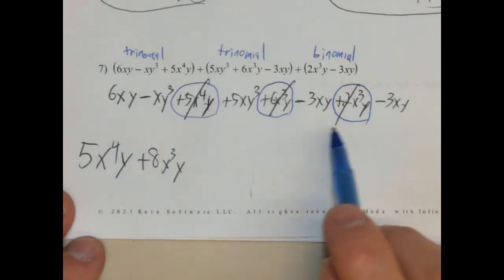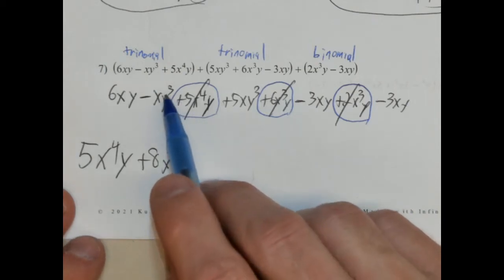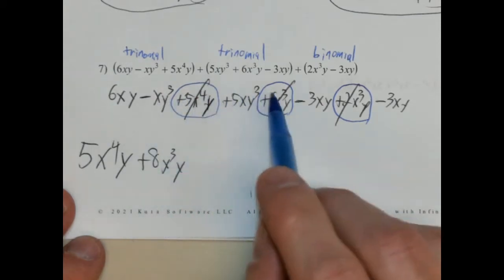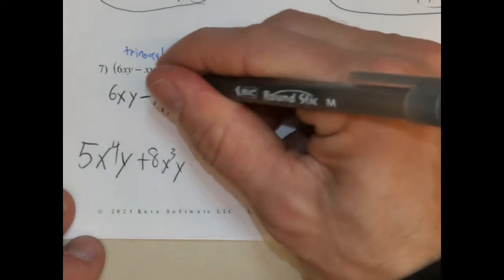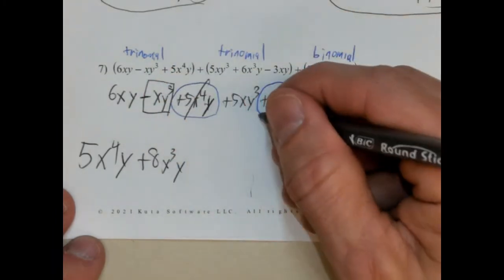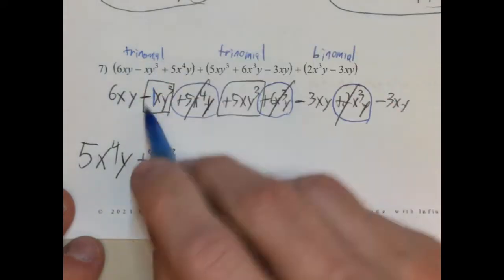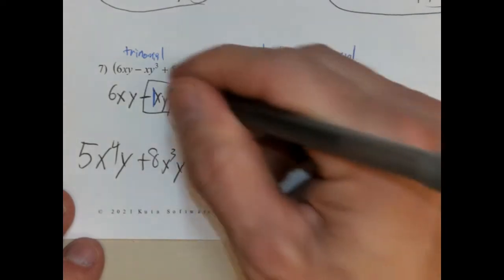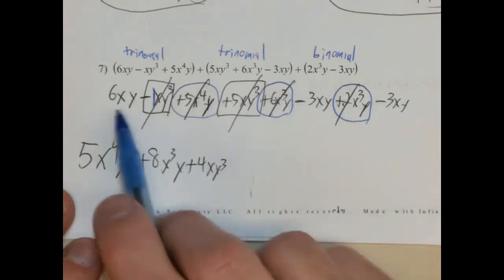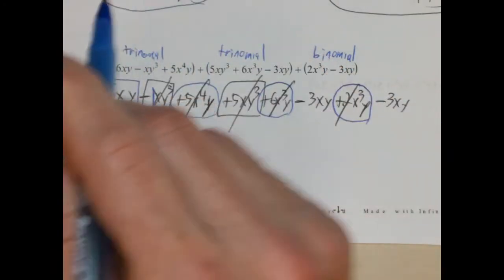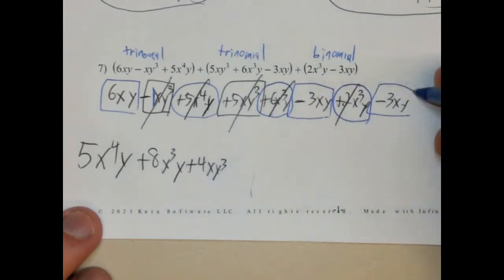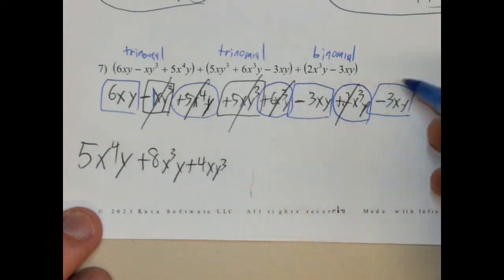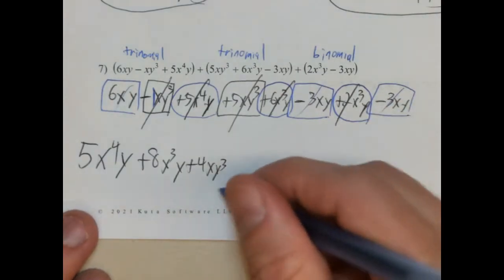I don't see any x squareds. Let's go with the higher y. We have xy cubed and xy cubed — those are like terms as well. Negative xy cubed, positive 5xy cubed — negative 1 plus 5 is positive 4. So plus 4xy cubed. Cross those out. And we have xy, xy, and xy — all like terms. So 6 minus 3 is 3, and 3 take away 3 is 0. So these actually cancel each other out because 0xy is 0. And that's your answer. Be very careful with these.